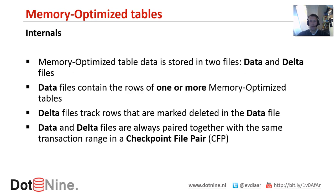We're going to dive a little bit deeper into memory-optimized tables and start with the internals — how do they work? Important to know that even though they're called memory-optimized tables, there will still be a couple of files on your file system: a data file and a delta file. A data file contains the rows of your memory-optimized table — it can actually hold multiple rows from multiple tables. The delta files track the rows that are marked deleted inside the data file, and also rows that are updated. An update is just a delete and an insert inside the data file. The data and delta files are always paired together inside what we call a checkpoint file pair, or CFP.